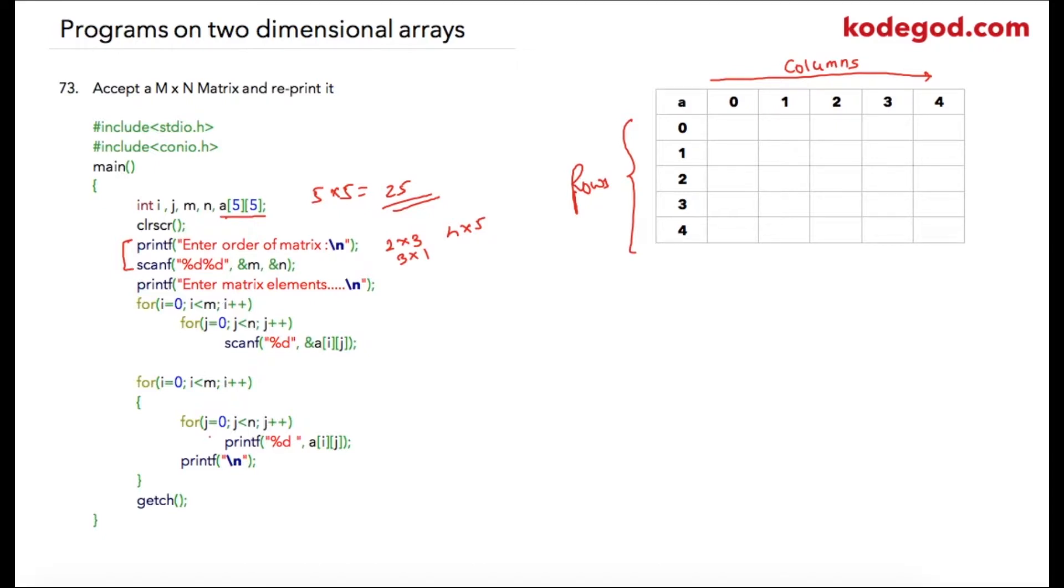So after entering values of m and n, using this code block we can accept values for all array elements. Suppose the user has entered three and three as values of m and n.